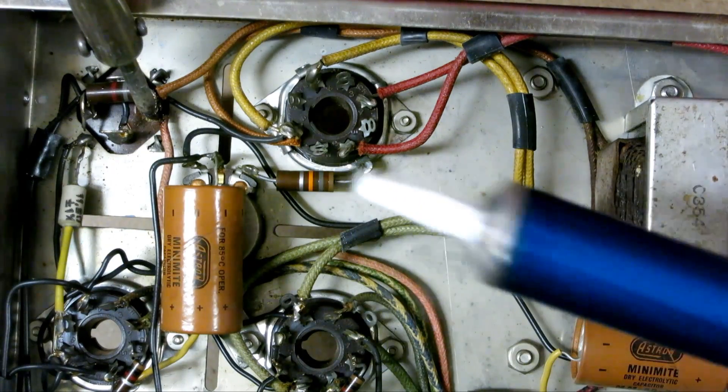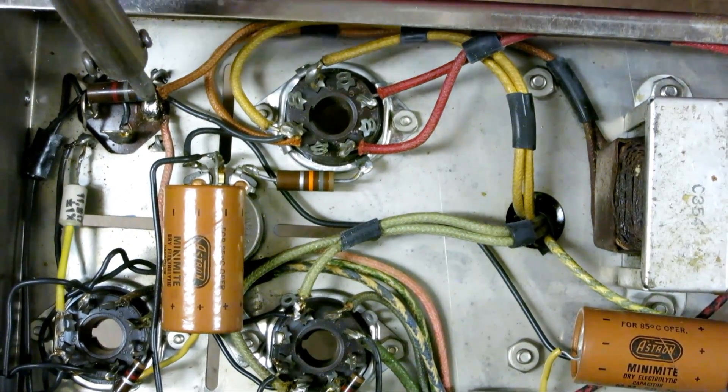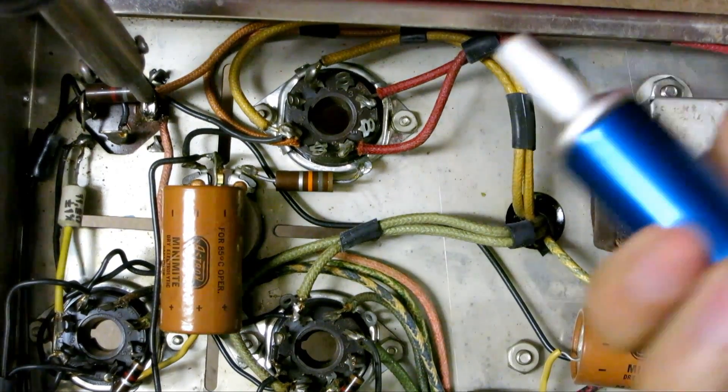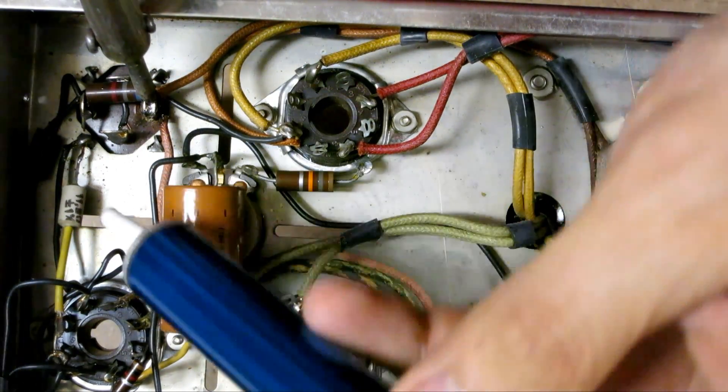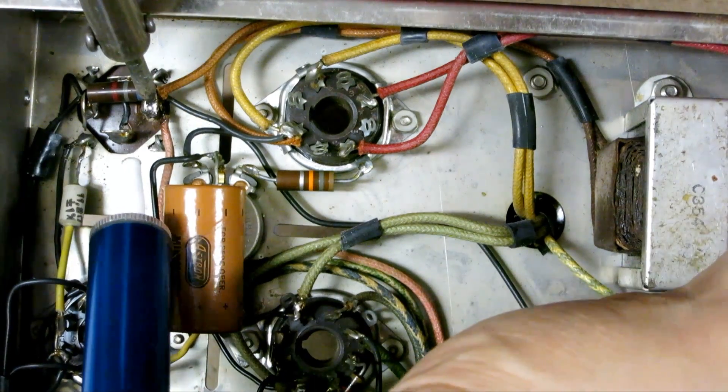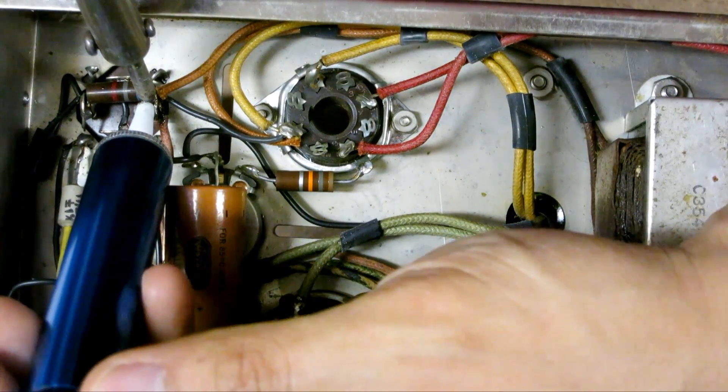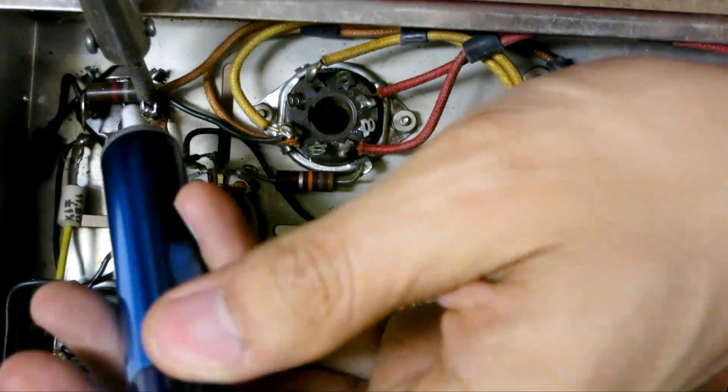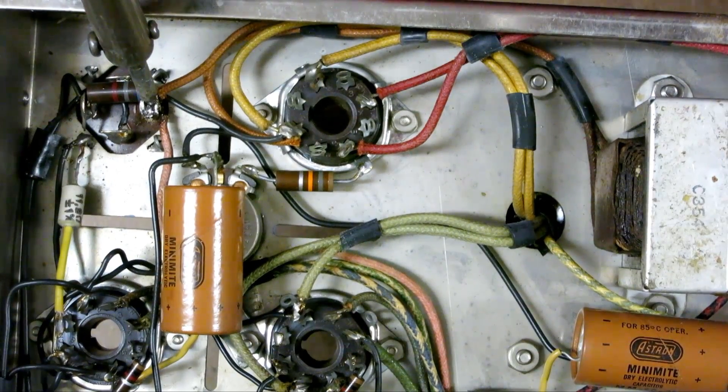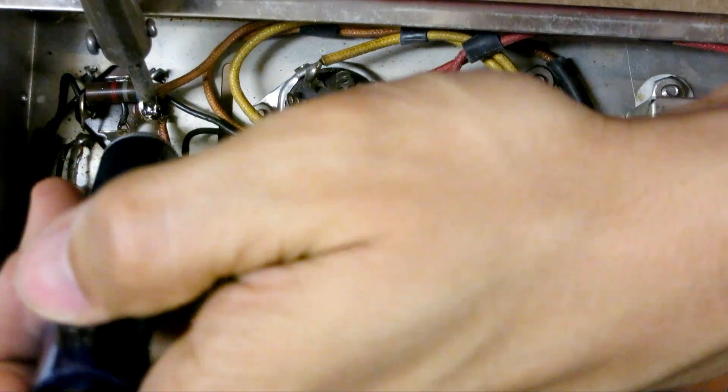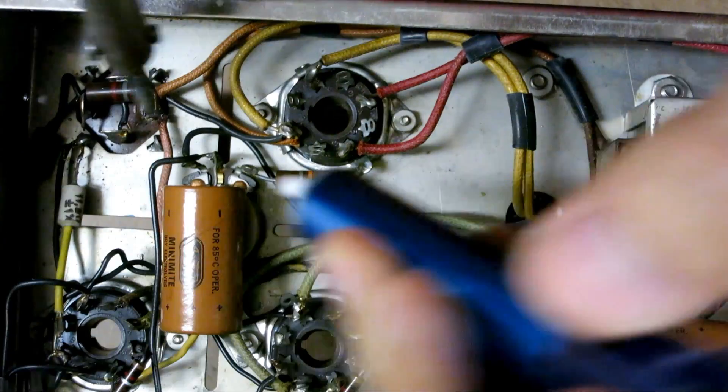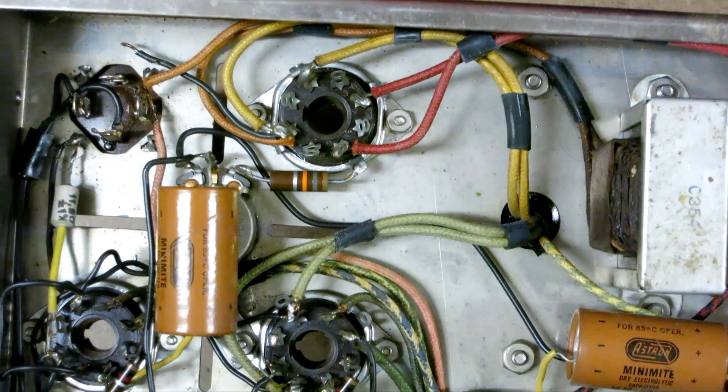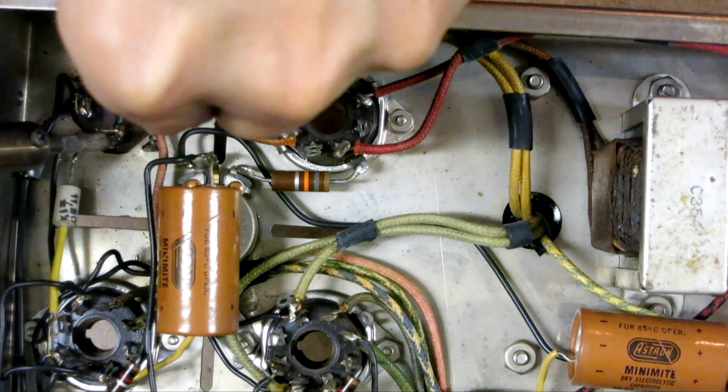And I also have a solder suction that helps pretty good too. It helps remove some of the solder. Once I see it bubble up, as you can see it's bubbling up right now, and all I do is just do that and then a chunk came out. Another chunk came out. That was a lot. Come on. So I've removed the resistor. I removed two of the wires already.